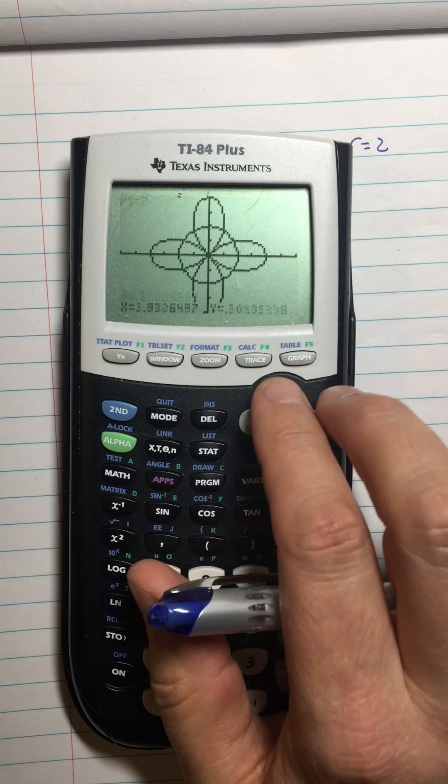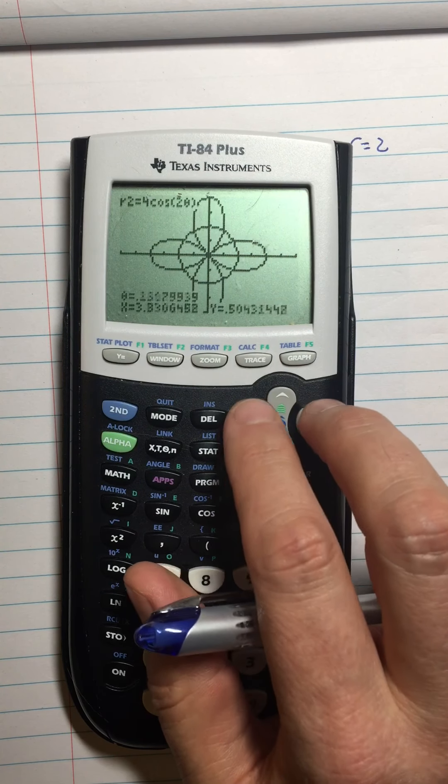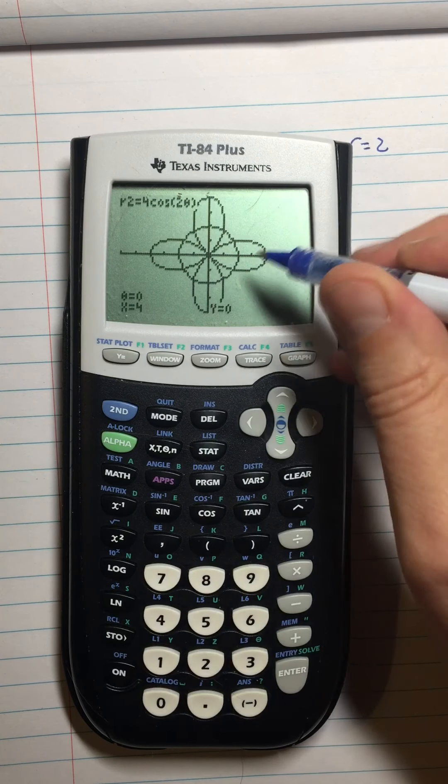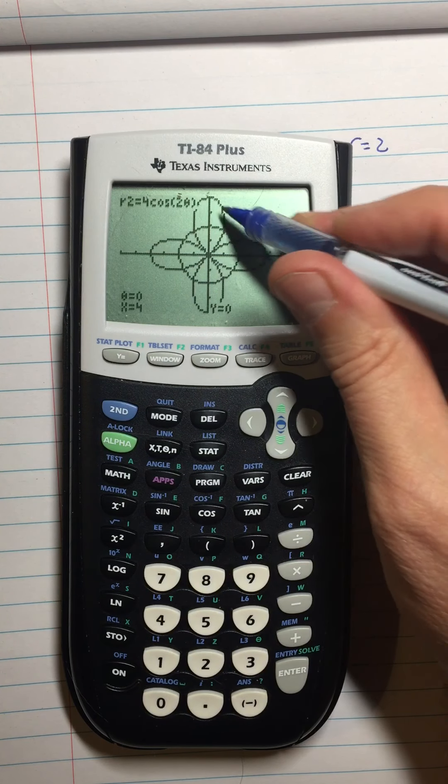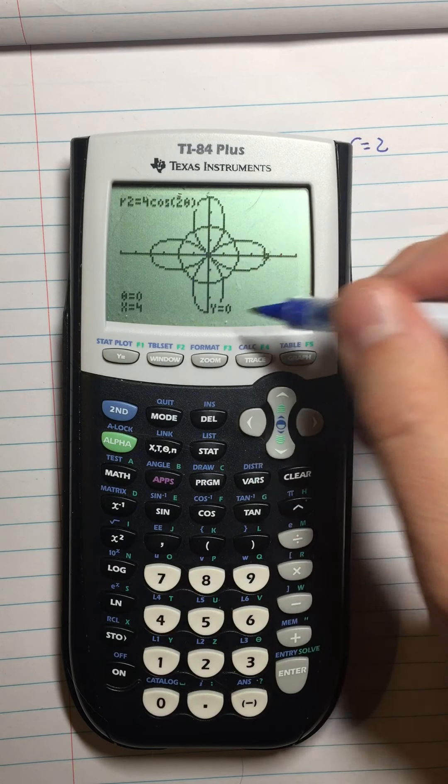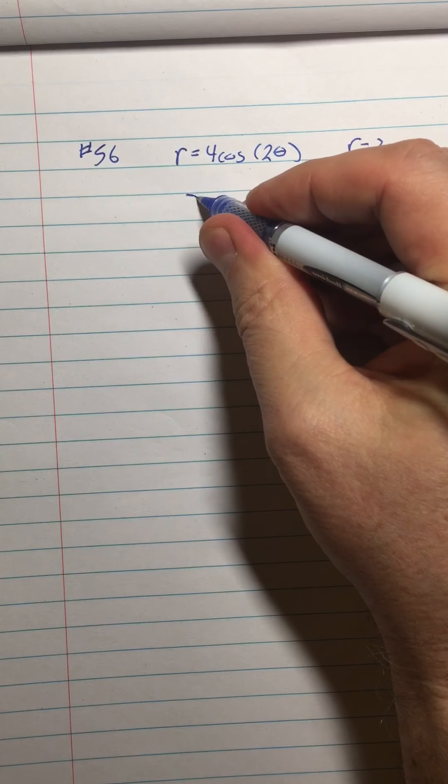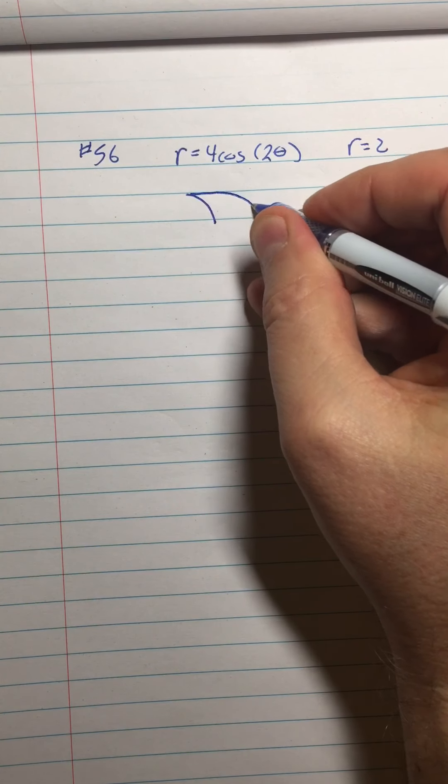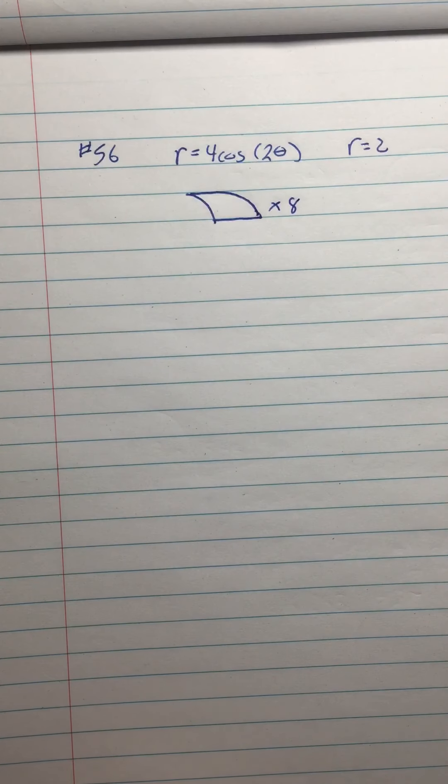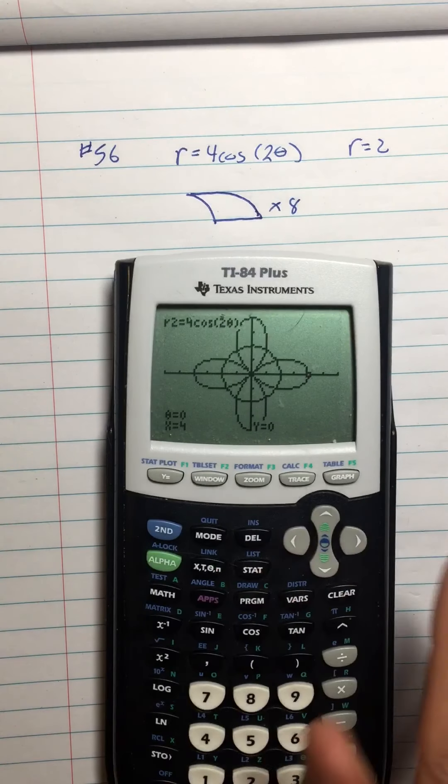I know that this point is theta equals zero. What if I just do this little lobe? They're all identical and I've got eight of them altogether: one, two, three, four, five, six, seven, eight. So I thought maybe I would do this little shape times eight. That might be a good simplification of the problem.